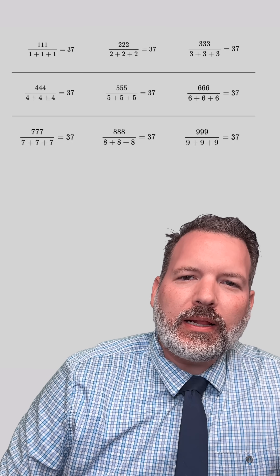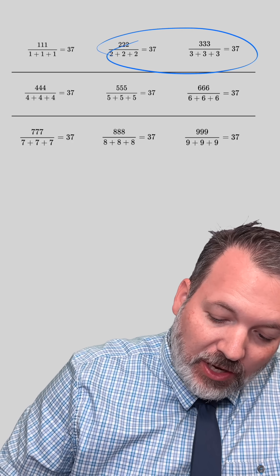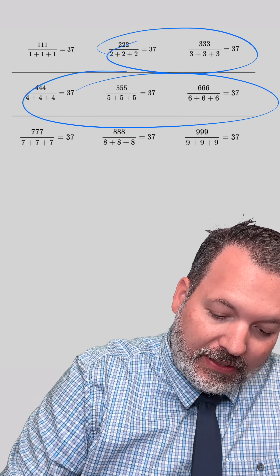Wow. 111 divided by 1 plus 1 plus 1 is 37. And so is every other digit divided by itself plus itself plus itself.